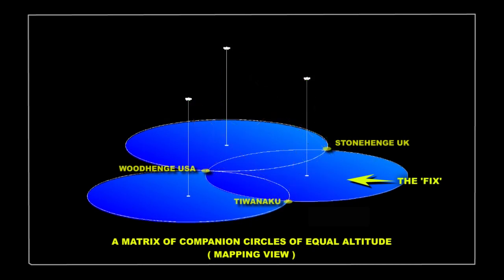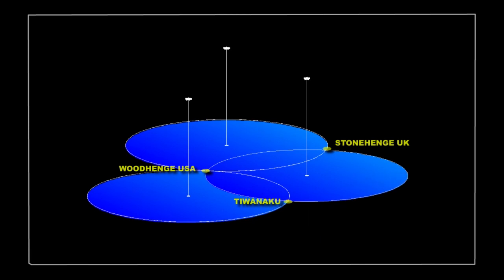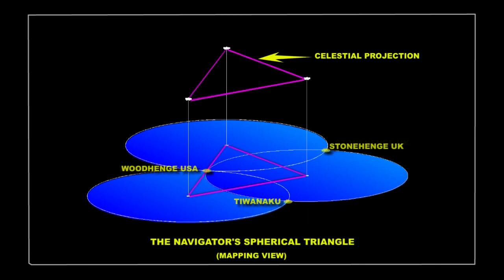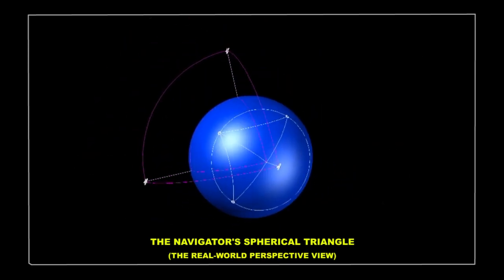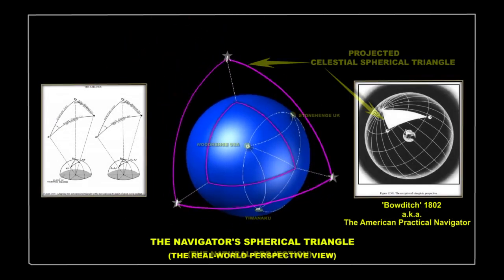In addition, this matrix of equal altitude circles also creates a navigator spherical triangle, which allows for a selected point on Earth to be matched with a corresponding star point on the celestial sphere.